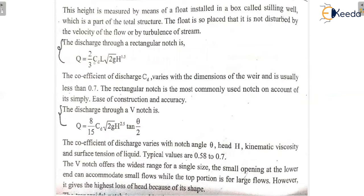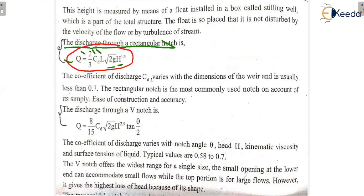The formulas are very important. The discharge through a rectangular notch is: Q = (2/3) × CD × L × √(2g) × H^1.5, where CD is the coefficient of discharge. The coefficient of discharge is typically less than or equal to 0.7. The rectangular notch is the most commonly used notch because the construction is very easy and it gives accurate results.